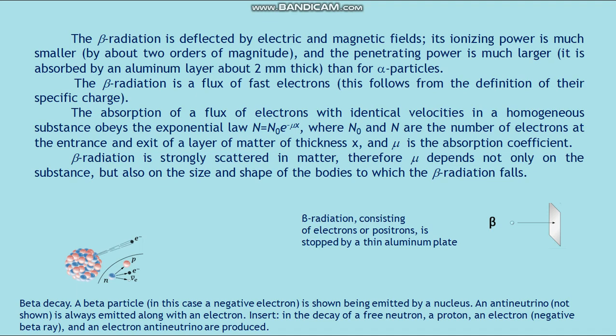Beta radiation is strongly scattered in matter. Therefore, μ depends not only on the substance but also on the size and shape of the bodies to which the beta radiation falls. Beta decay: beta particles, the negative electron, is shown being emitted by a nucleus.